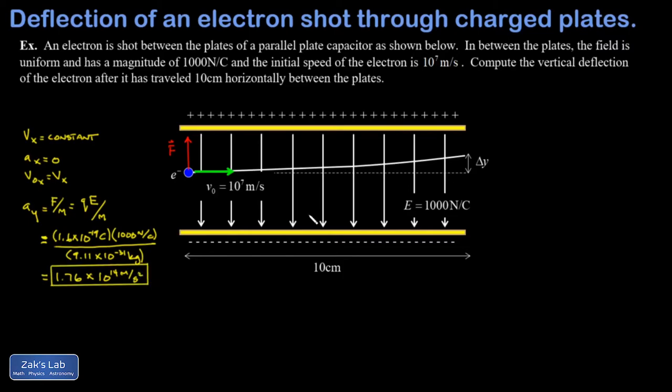All right, so there's the acceleration that causes the vertical deflection of the electron as it travels through these plates, and we're asked to find the size of the deflection if the horizontal travel distance is 10 centimeters.